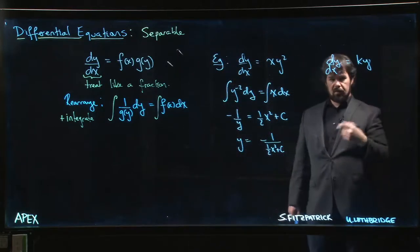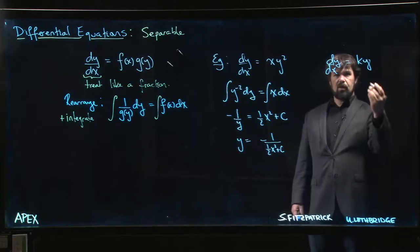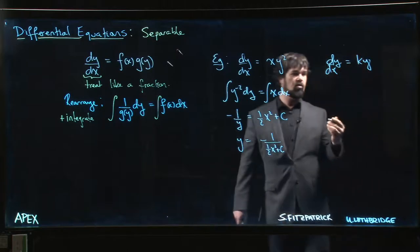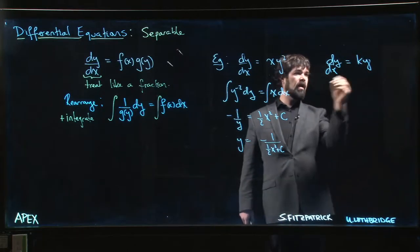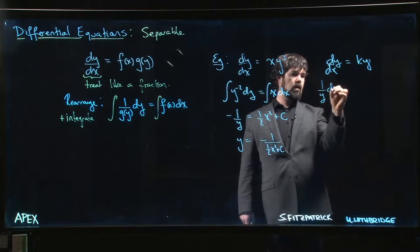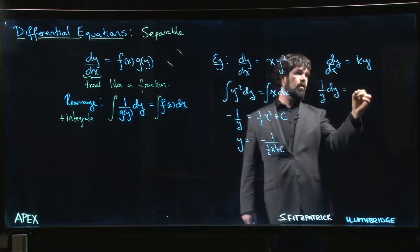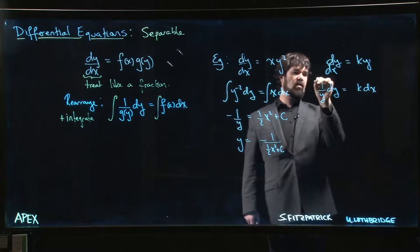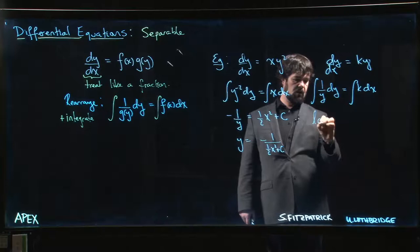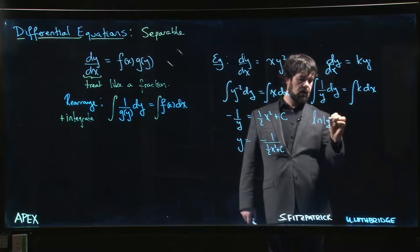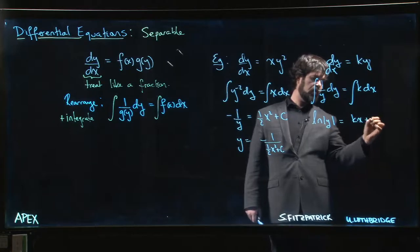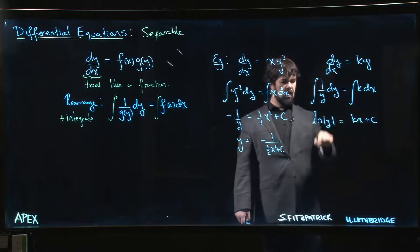Same story here. We looked at this one before; we saw that the answer should be an exponential function, possibly up to a constant. So let's try to understand why that is. Well, if I rearrange, kind of same as before: 1/y times dy equals simply k times dx. And I integrate. Well, on this side I get natural log of y.